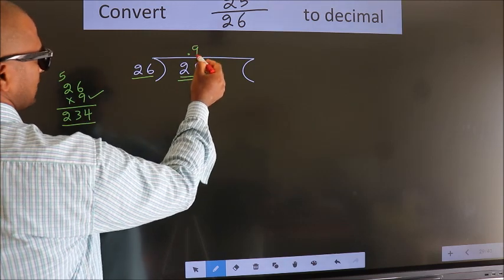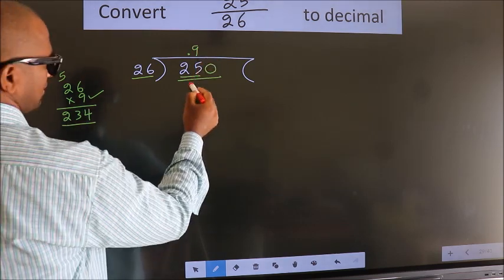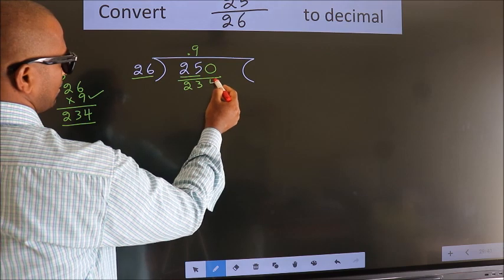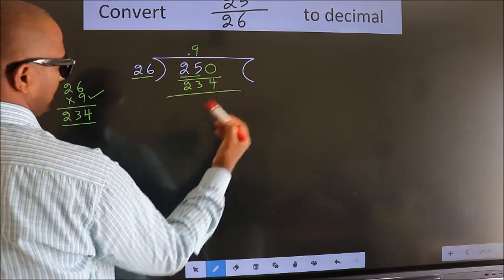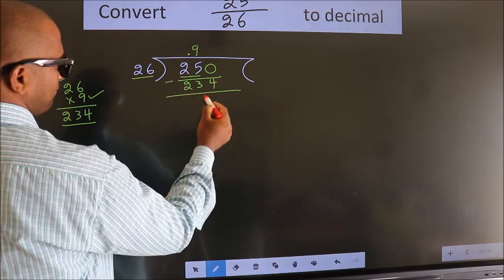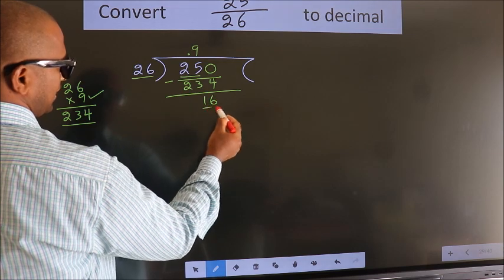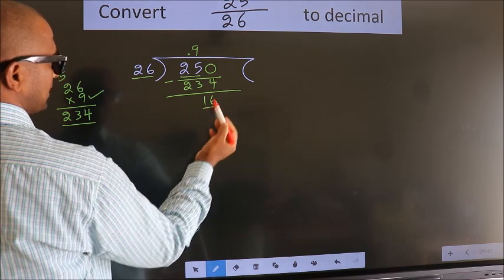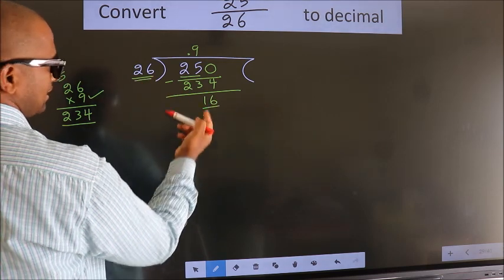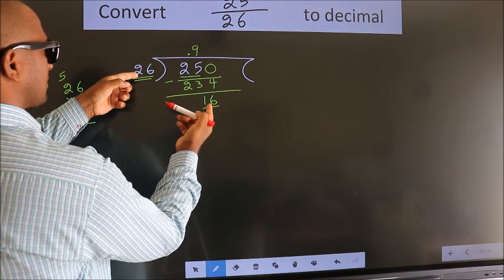So 26 nines is 234. Now we should subtract. We get 16. Here we have 16, here 26. 16 is smaller than 26.